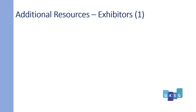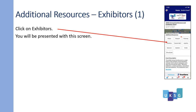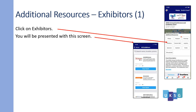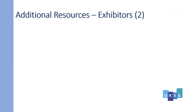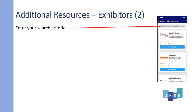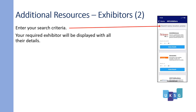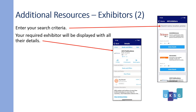Exhibitors, first slide. Click on exhibitors and you are presented with this screen. You can then enter a search to find a specific exhibitor. Exhibitors, second slide — enter your search criteria and your required exhibitor will be displayed with all their details.